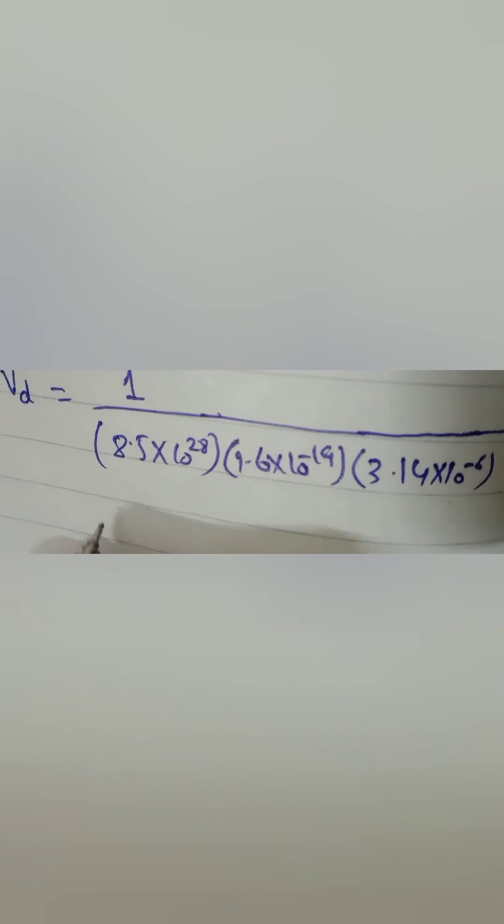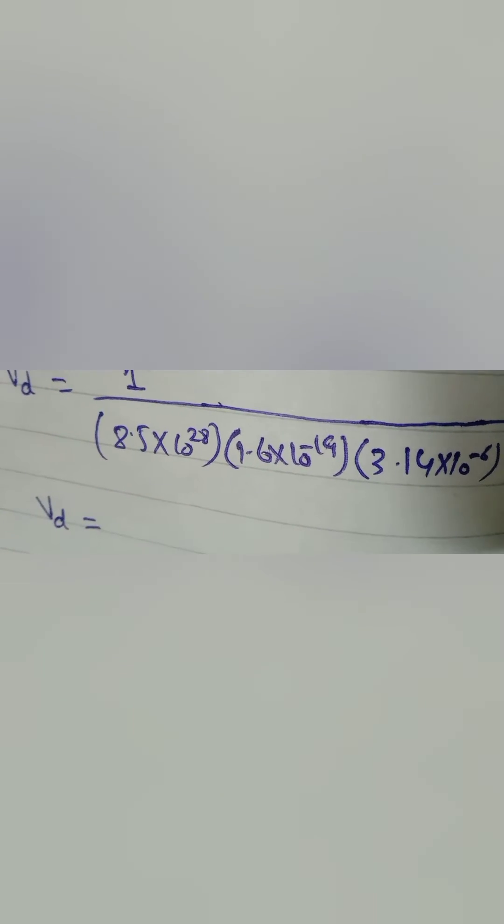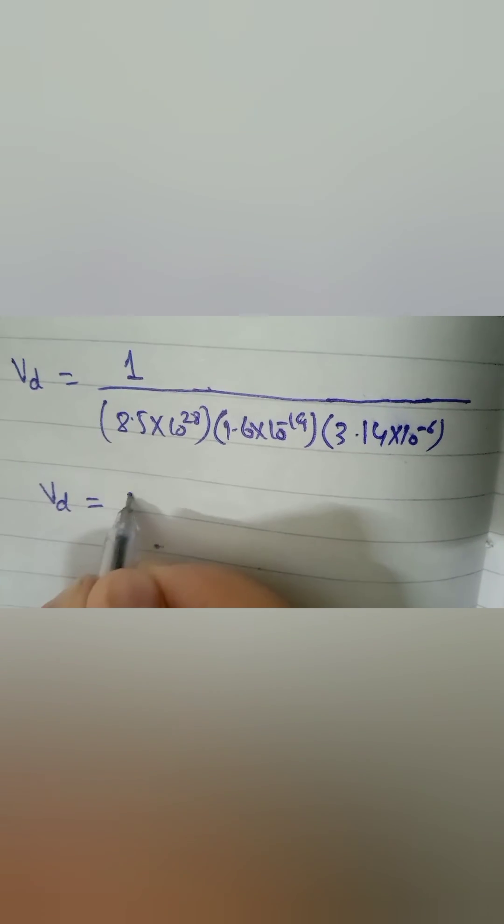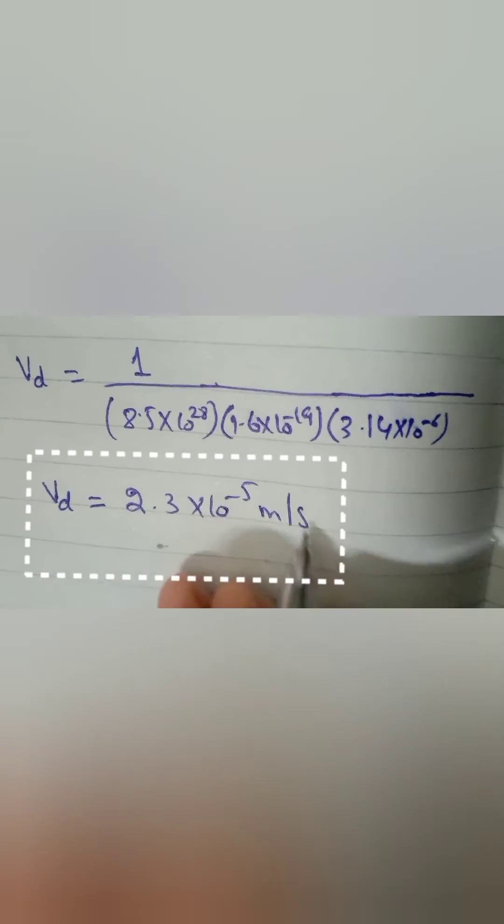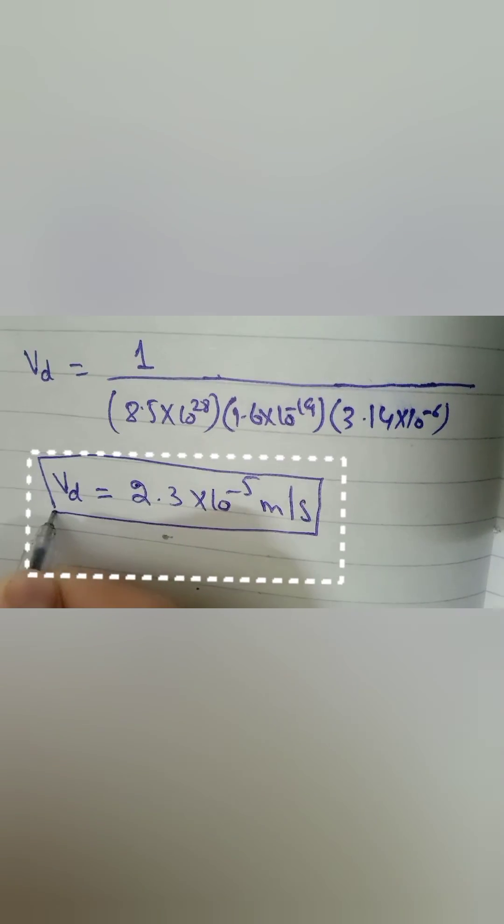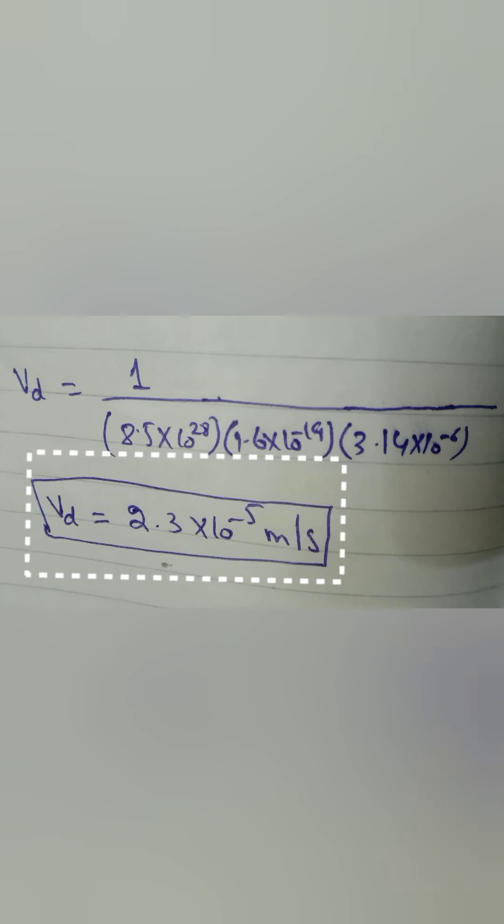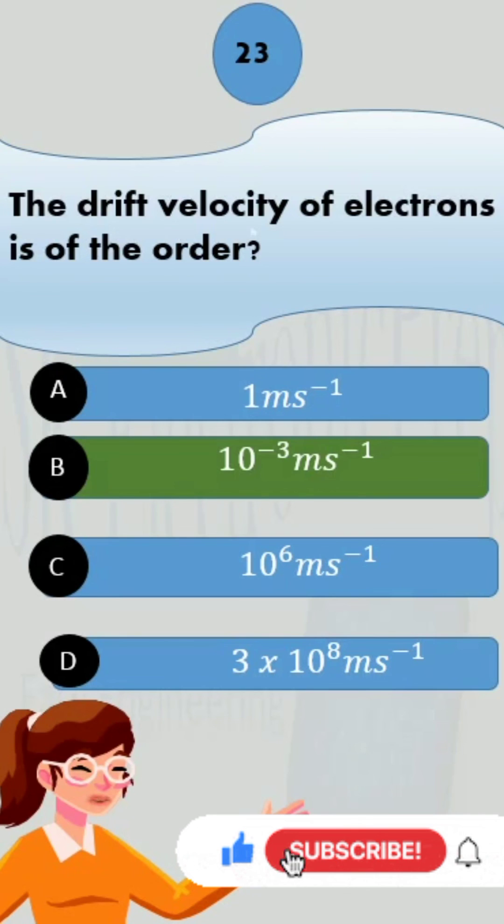So now we have put all our values. After calculating, we obtain drift velocity as 2.3 into 10 raised to the power minus 5 meters per second. Since we converted area earlier into meters, our answer according to the options becomes B, which is 10 raised to minus 3 meters per second. All other options are irrelevant.